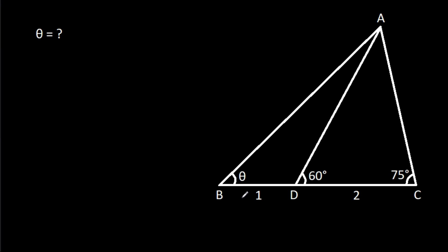In this video, we have been given that BD is 1, CD is 2, angle ADC is 60 degrees, angle ACD is 75 degrees, and angle ABD is theta. We have to find theta.